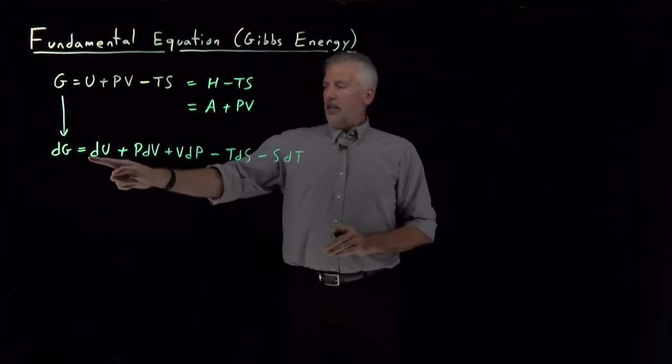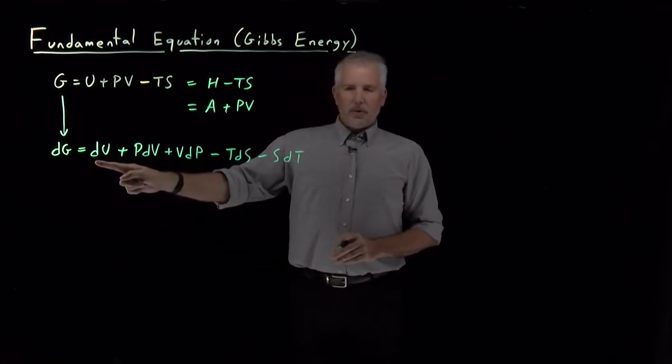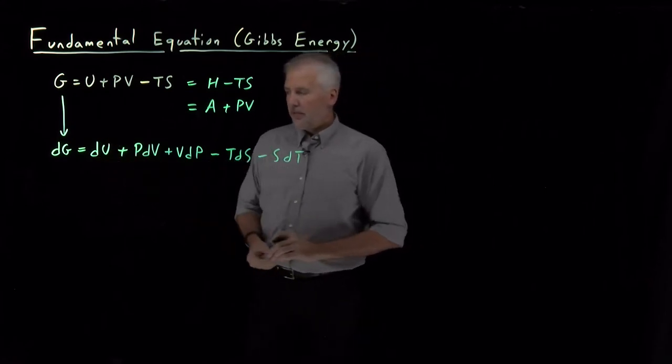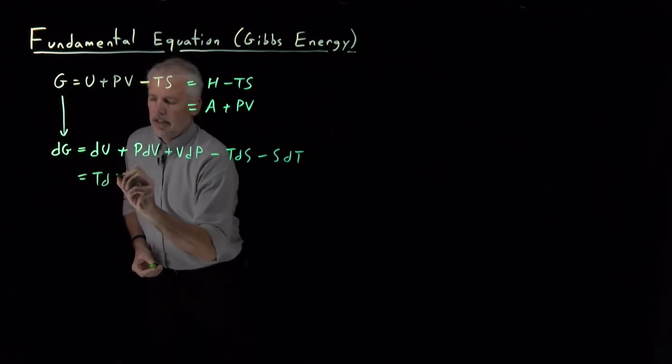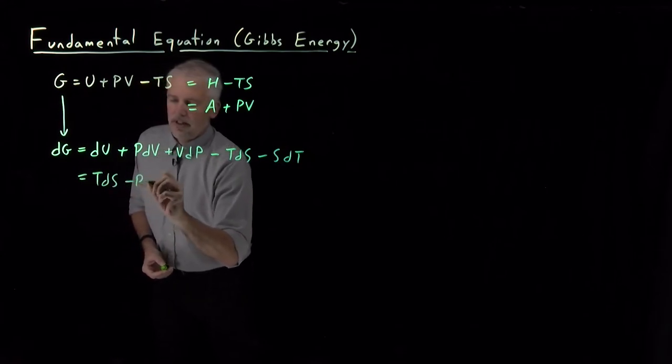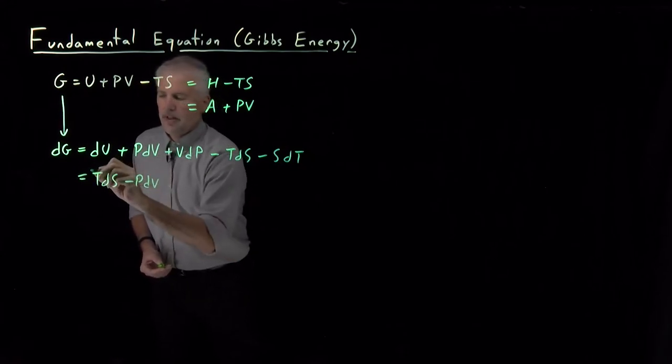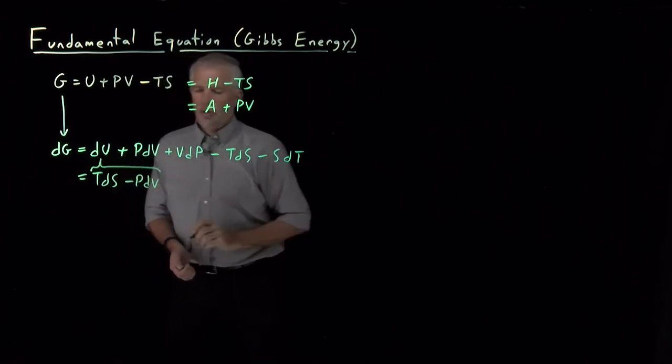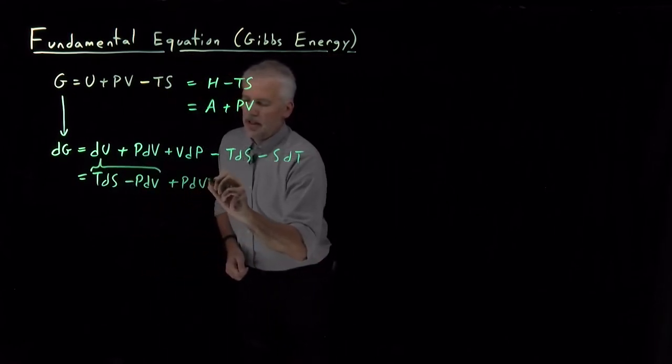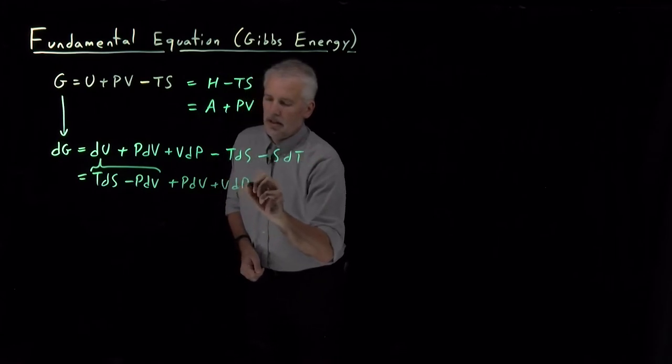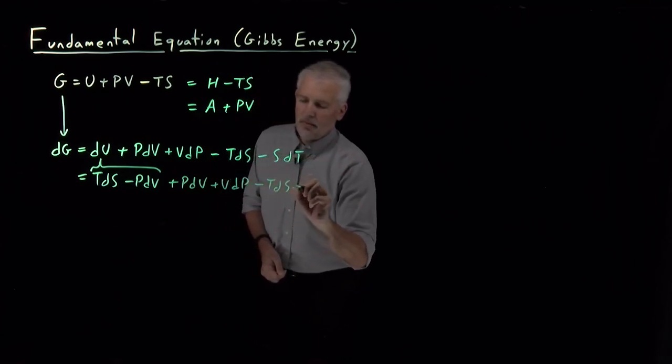And since we know a fundamental equation for DU, DU can itself be written as TDS minus PDV. So, if I use that term for DU and then rewrite the rest of these terms, I've got PDV plus VDP minus TDS minus SDT.